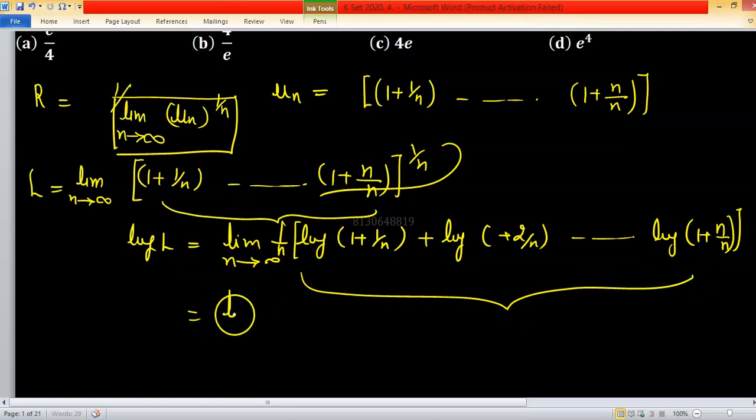So I can use the concept of Riemann sum, limit n tending to infinity 1 upon n and this is summation r running from 1 to n log 1 plus r upon n, this is by Riemann sum and using Riemann sum I can use definite integral as Riemann sum. So, this one I will write is 0 to 1 log 1 plus x dx and apply integration by parts.